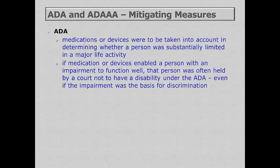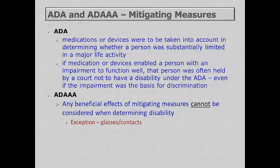Another clause in the ADA involves mitigating measures — any medication or device that, when taken into account, would lessen a person's limitation in some major life activity. If the person can be helped enough, they would not be considered disabled. In the Amendments Act, it was specifically stated that any beneficial effects of mitigating measures cannot be considered when determining a disability. So if a person is missing a leg but has a prosthetic and can walk around with it, they are still considered disabled.